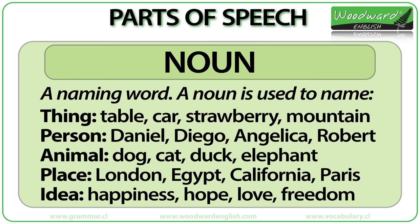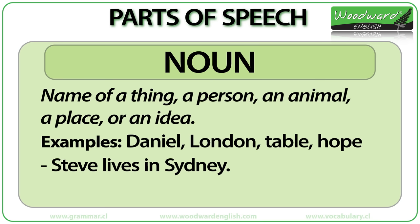We can name a thing: table, car, strawberry, mountain — these are all names of things. We can name a person: Daniel, Diego, Angelica, Robert. We can name an animal: dog, cat, duck, elephant. We can name a place: London, Egypt, California, Paris. We can name an idea: happiness, hope, love, freedom.